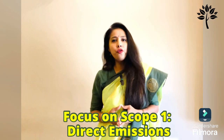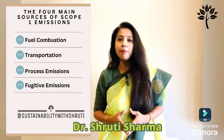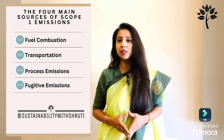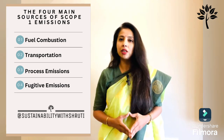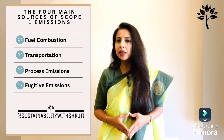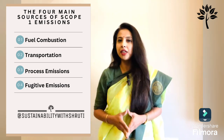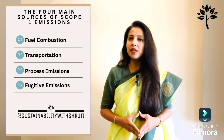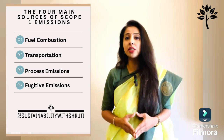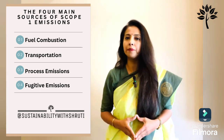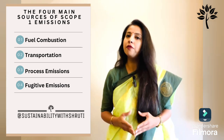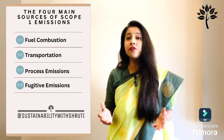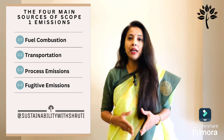These emissions typically come from four main sources. The first is fuel combustion — burning fuel in boilers, furnaces and generators. The second is transportation: any fuel used by company-owned vehicles such as trucks, cars or delivery fleets. The third is process emissions, which involve emissions from physical or chemical processes such as cement manufacturing or chemical production. The fourth is fugitive emissions — unintended leaks or releases of gases such as refrigerants from cooling systems or methane leaks from pipelines.